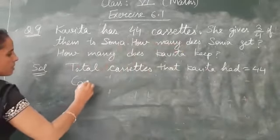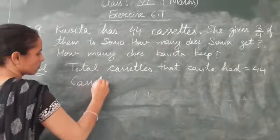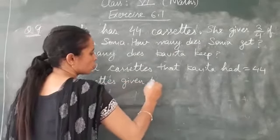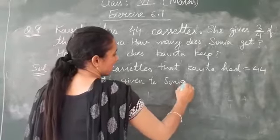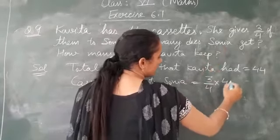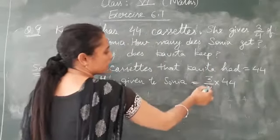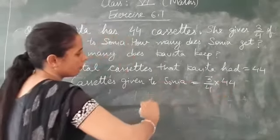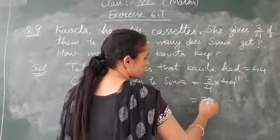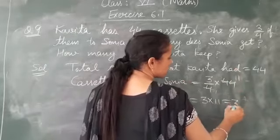Now cassettes given to Sonia, that is the fraction. How we can change fraction into cassettes? By multiplication. We will multiply this fractional part with total number of cassettes. So 4 into 11 is 44, so it is 3 into 11 which will become 33.